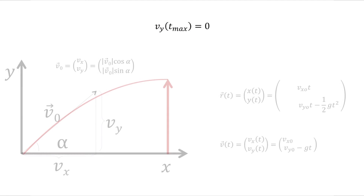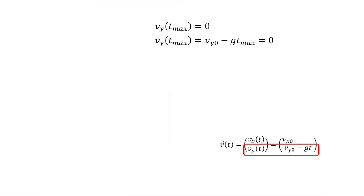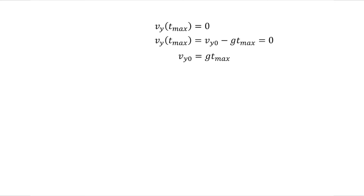Betrachten wir unsere Bewegungsgleichungen. An der Stelle t_max ist vy(t_max) gleich 0. Setzen wir diese Gleichung gleich 0, können wir den Zeitpunkt bestimmen. Dazu addieren wir beide Seiten der Gleichung mit g·t_max und kommen so auf Vy0 = g·t_max. Wenn wir nun die Gleichung auf beiden Seiten durch die Erdbeschleunigung teilen, erhalten wir den Ausdruck: t_max = Vy0 / g.